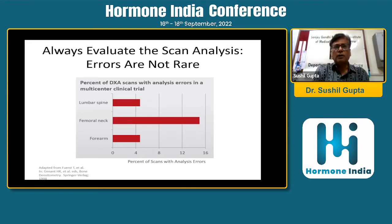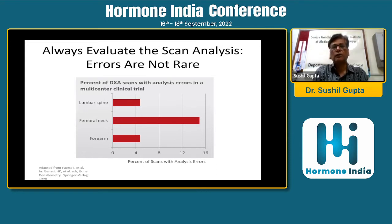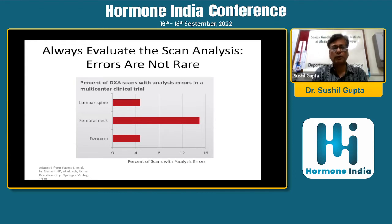Errors do happen in reporting, in acquisition of images, and at many other places — and they are not very uncommon. Even in large multi-center clinical trials these errors occur. Once you are reviewing a scan, one should evaluate it for analytical errors. Errors can happen in interpretation or analysis at the lumbar spine, femoral neck, or forearm, at the tune of around 6% to almost 15%.